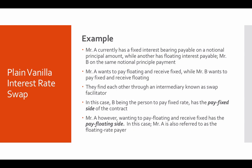Mr. A wants to pay floating and receive fixed, because he currently has a fixed interest payable on a loan. He believes that the interest rate is going to go down, and if it goes down compared to the floating rate, he'd be at a loss — so to cover himself he enters a swap to pay the lower floating rate. Mr. B, on the other hand, already has a floating payable and is worried about the floating rate going up, so he wants to receive floating and pay fixed instead.